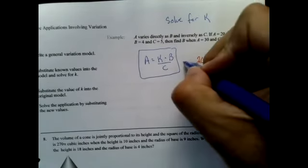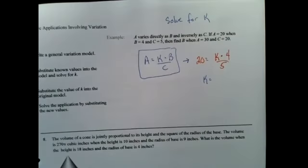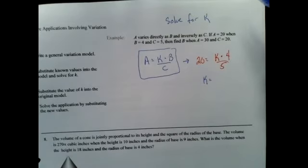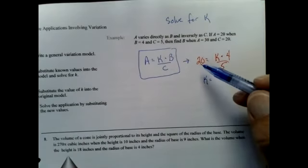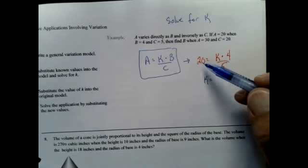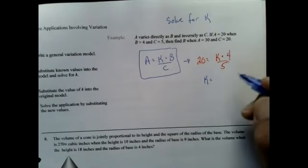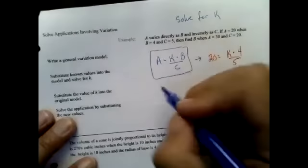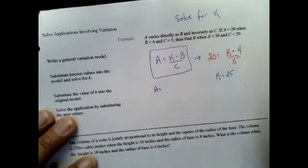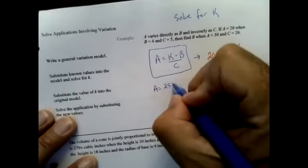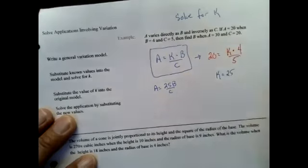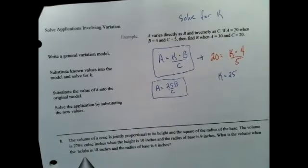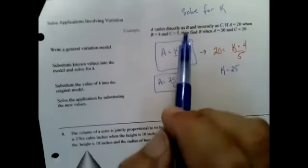k equals, multiply by 5, 20 times 5 is 100, divide by 4, k is 25. So now I have a model: a equals 25b over c. So I set up the equation, I found the k, I set up the equation, I found the k.